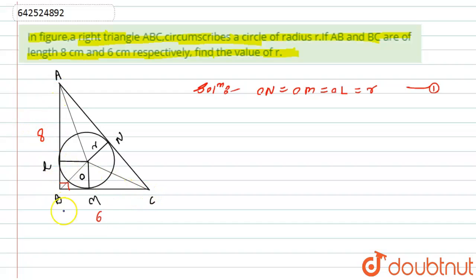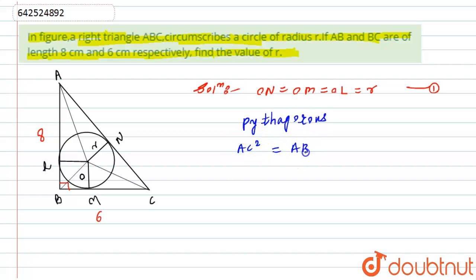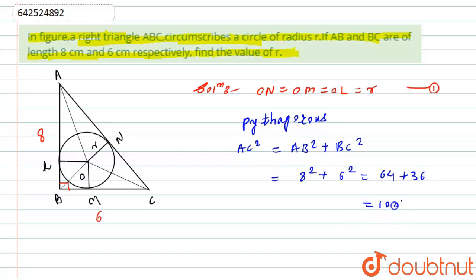Now looking at the right angle triangle, AB and BC are given. Using the Pythagorean theorem, I can find AC. So AC² = AB² + BC² = 8² + 6² = 64 + 36 = 100, which is 10². Hence, AC = 10 centimeters.